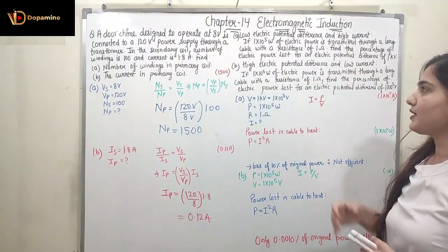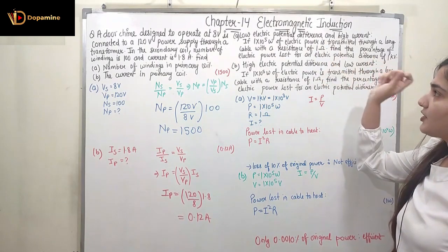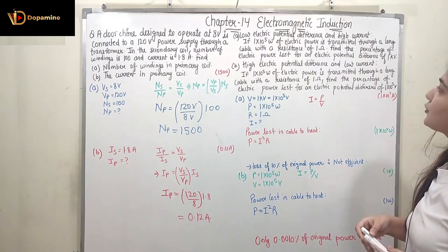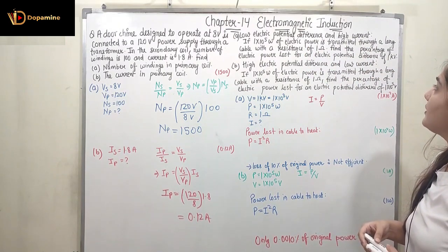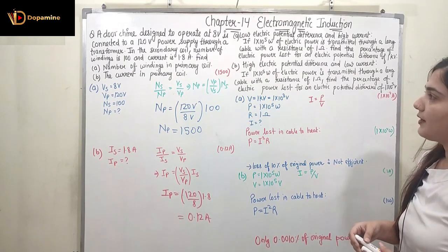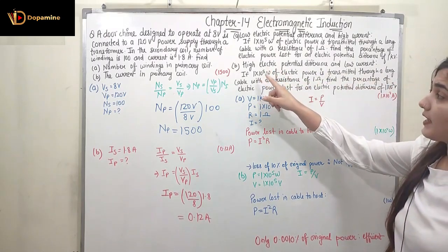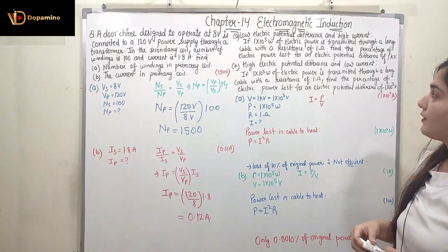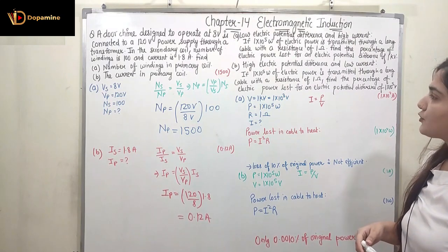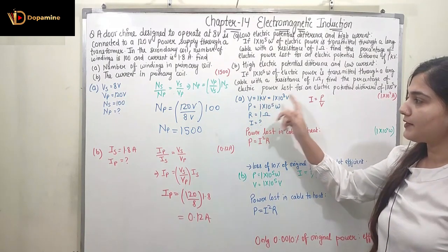Moving on to the next question, which has two cases. Case 1: low electric potential and high current — 1×10⁵ watts of electric power transmitted through a cable with resistance of 1 ohm; find the percentage power lost for a potential difference of 1 kilovolt. Case 2: high electric potential and low current — same power and resistance, but potential difference of 1×10⁵ volts.